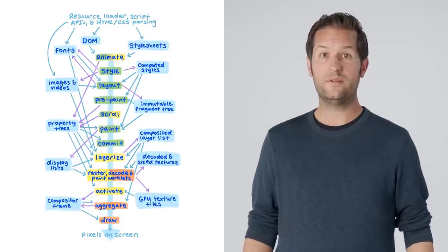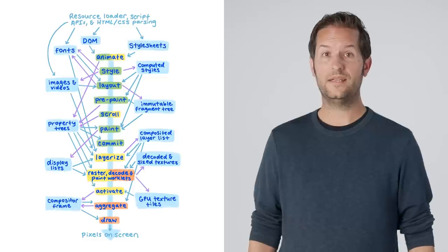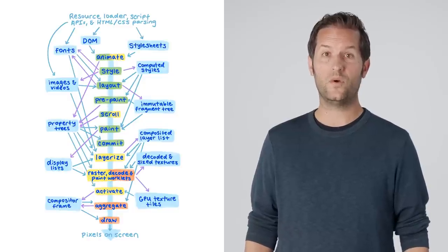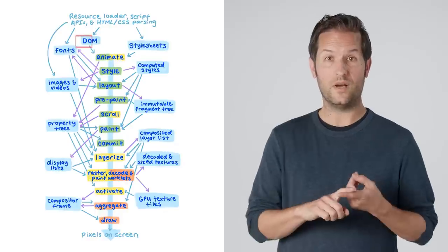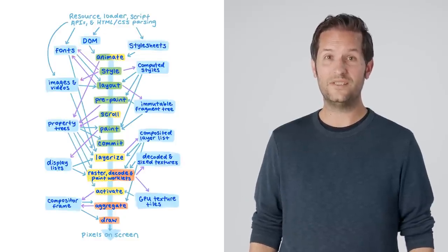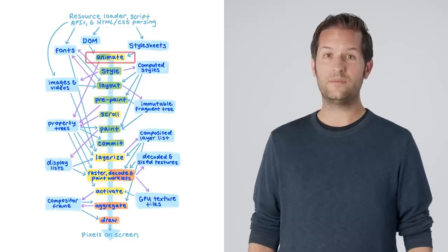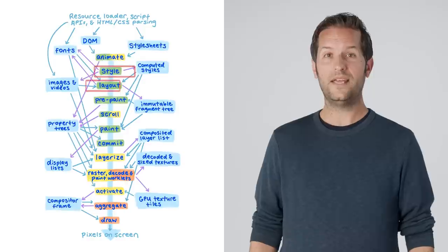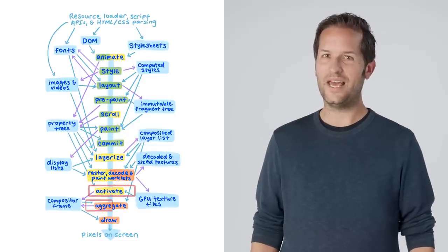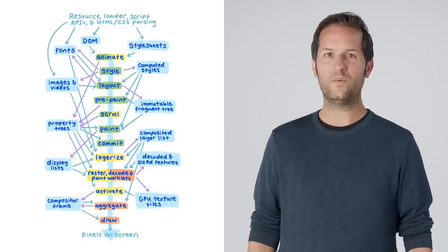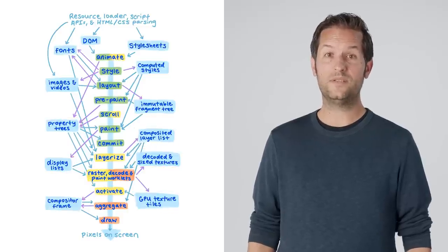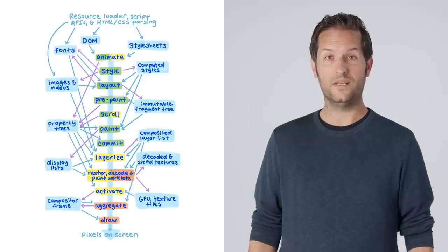Now I'd like to give a brief overview of how the RenderingNG architecture works on the inside. The entire system is organized into a high-performance rendering pipeline with a number of stages, each of which performs a well-defined task. The pipeline starts with animation updates, then runs style, layout, prepaint, scroll, paint, commit, layerization, raster, activation, aggregation, and finally draw. Along the way, the pipeline creates a number of intermediate data structures. The colors of the pipeline stages you can see here — green, yellow, and orange — indicate which thread or CPU process is running each stage.